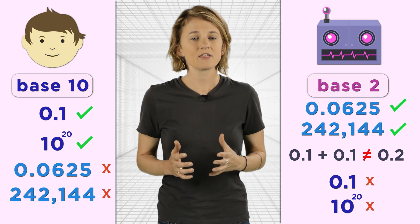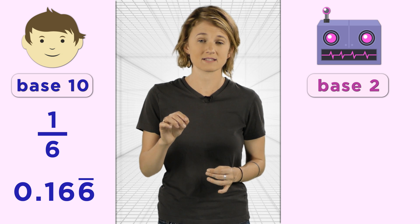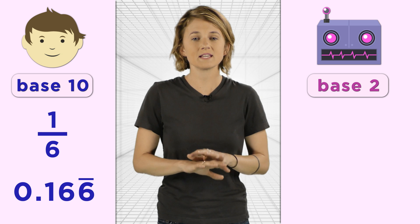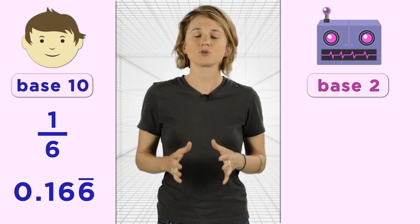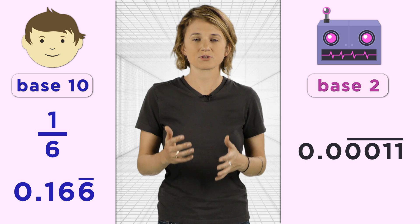In base 10, the number 1/6 is 0.166666 repeating. It has infinitely many digits. Similarly, it takes infinitely many digits to write 0.1 in base 2. So the computer is forced to round.